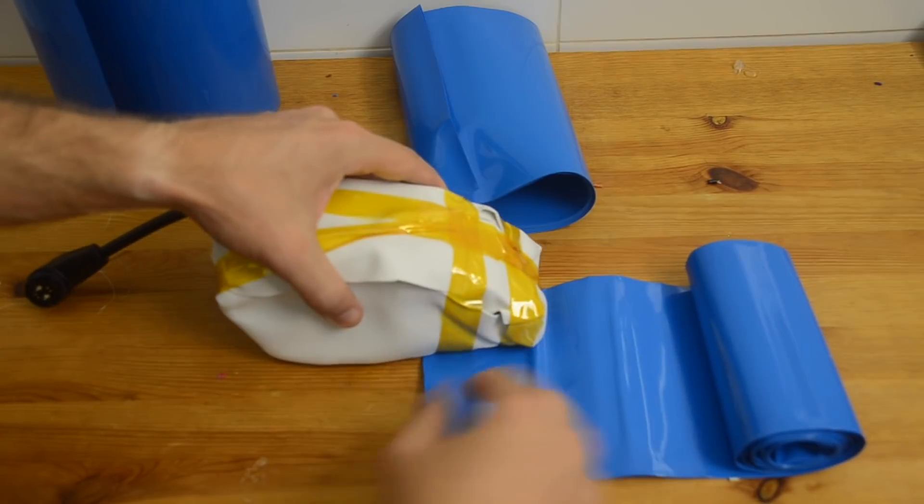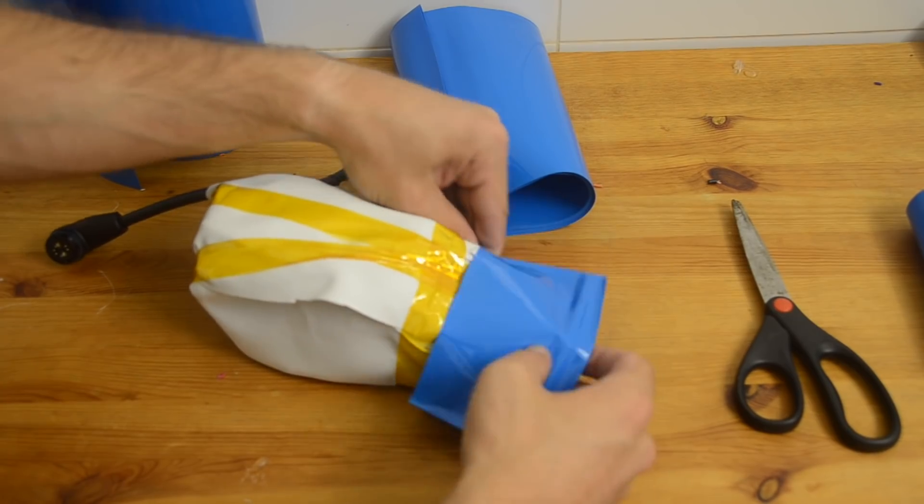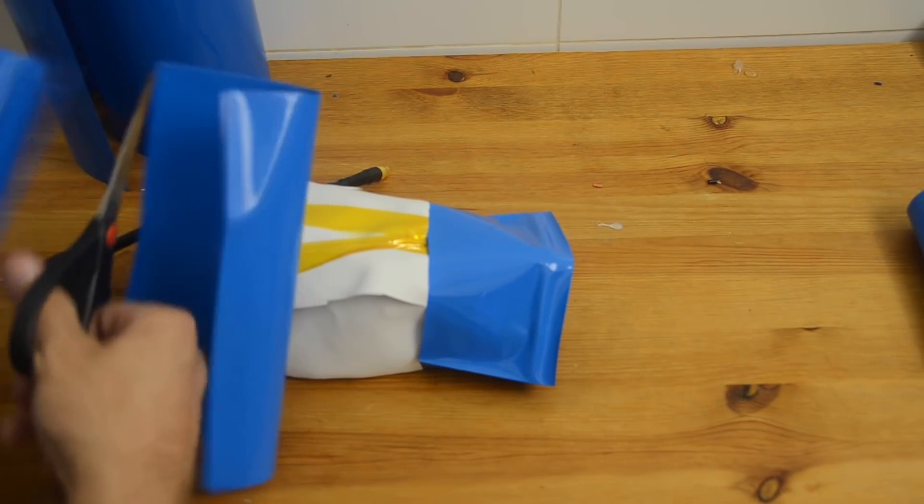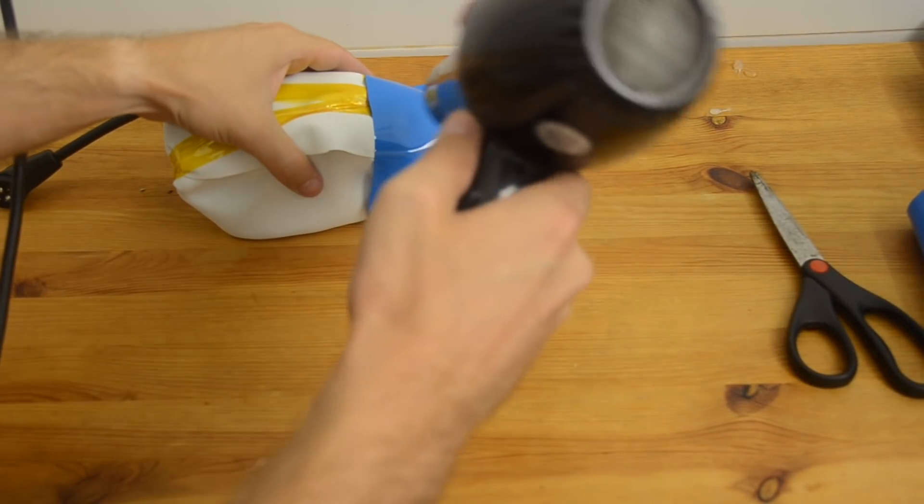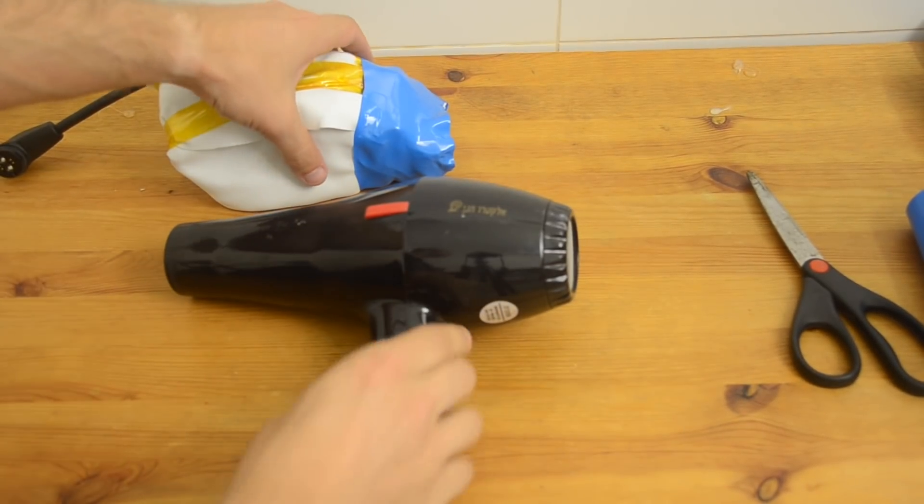I begin by measuring out and cutting the smallest piece of heat shrink and making sure that it can slide as far up the battery as possible. Then I'll cut the medium piece so that it can cover most of the battery, including that first piece. I'm just going to use a strong hair dryer here on the high setting, but you can also use a heat gun on a low or medium setting.